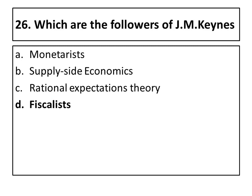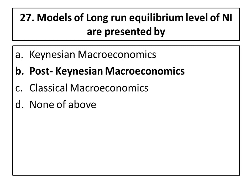Twenty-fifth question on post-Keynesian macroeconomics: who are the followers of J.M. Keynes? Options A, B and C are non-followers of J.M. Keynes — they are post-Keynesian macroeconomic economists who are against Keynes. The fiscalists basically follow the idea of J.M. Keynes and are followers of post-Keynesian macroeconomics, representing the long-run equilibrium model. Keynes determined the equilibrium level of national income in the short run, while Keynesian macroeconomics presents long-run equilibrium models.